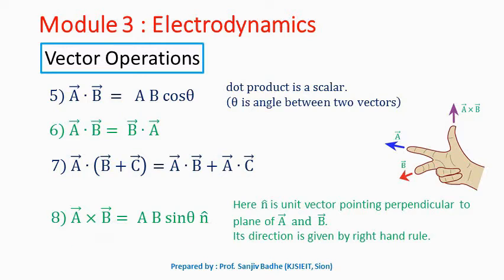Cross product is written as a bar cross b bar equal to ab sin theta n cap, where a and b are the magnitudes of vectors a bar and b bar respectively, and theta is the angle between a bar and b bar. n cap is the unit vector pointing perpendicular to the plane of a bar and b bar. That means a bar cross b bar is a vector — unlike the dot product, which was a scalar. The cross product will result in a vector and will have a direction.